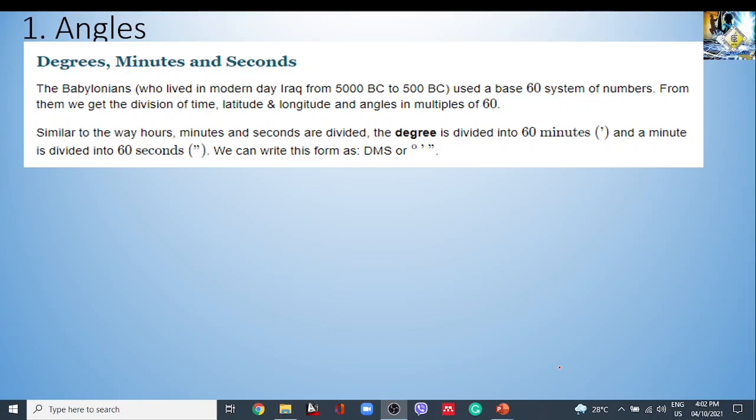Degrees. The units for degrees. Degrees, minutes, and seconds. How do you write or express the angle? During the Babylonian time, who lived in modern day Iraq from 5000 B.C. to 500 B.C., they used a base of 60 system of numbers. From then, we get the division of time, the latitude and the longitude, and the angles in multiples of 60. In a similar way, similar to the way hours, minutes, and seconds are divided in degrees, which is divided into 60 minutes, which is the symbol. And a minute divided in 60 with this symbol. And we can write this in a form of degree, minute, and seconds.